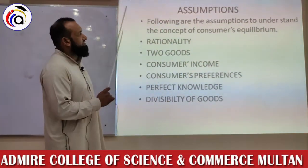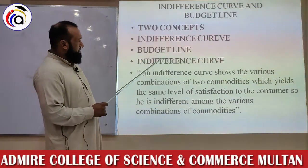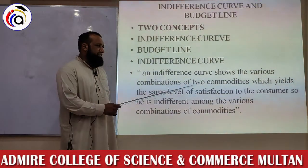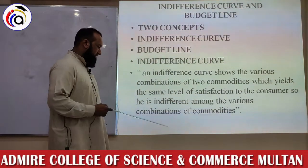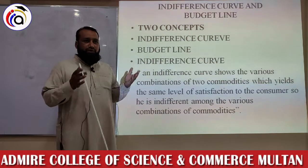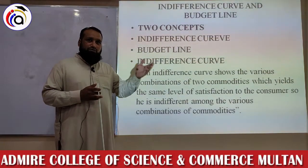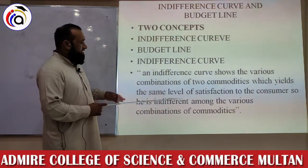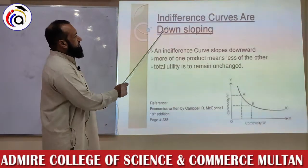Two concepts — the indifference curve and the budget line — need to be explained for consumer equilibrium. First, the indifference curve shows the various combinations of two commodities which yield the same level of satisfaction to the consumer, so he is indifferent among the various combinations. Different bundles and different pairs are presented to the consumer. The consumer is indifferent among these pairs — A is not preferred to B, B is not preferred to C — he can select any combination according to his desire.